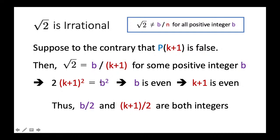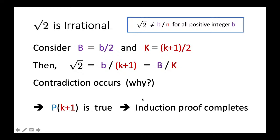Since b is even, b² is a multiple of 4. Dividing 2(k+1)² = b² by 2 shows (k+1)² is even, which implies k+1 is even. So we can divide both b and k+1 by 2 and both remain integers. Let B = b/2 and K = (k+1)/2, both positive integers.